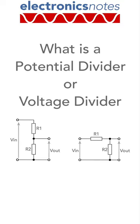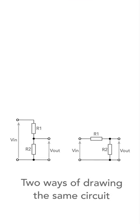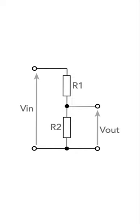The potential divider or voltage divider is very straightforward but very useful. As the name implies, it divides the potential or voltage at the input to give a lower output voltage.